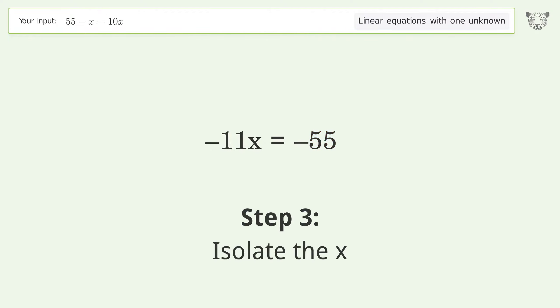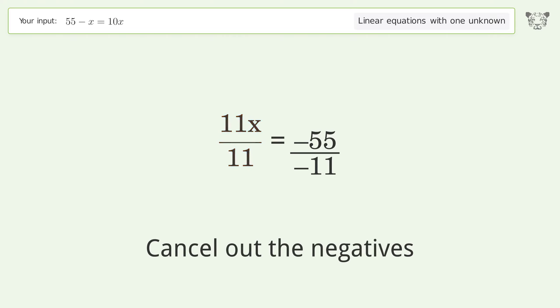Isolate the x. Divide both sides by negative 11. Cancel out the negatives. Simplify the fraction. Cancel out the negatives.